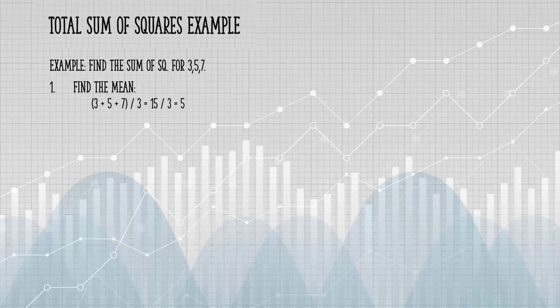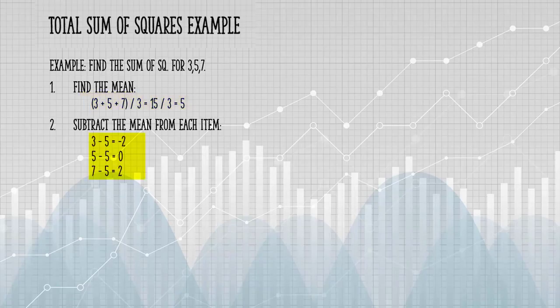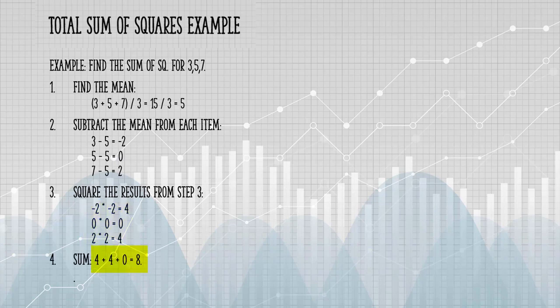Let's take a look at a simple example. You find the mean by adding those up and dividing by three. That gives us five. You then subtract the mean from each of those items. If we square all of those results and add them together, we get a total sum of squares of eight.